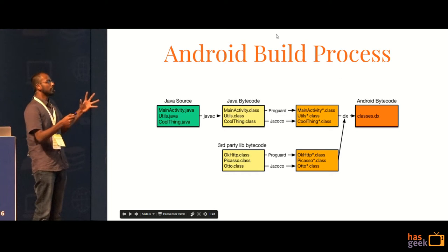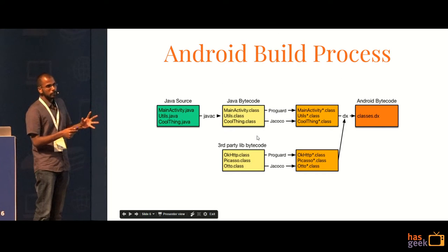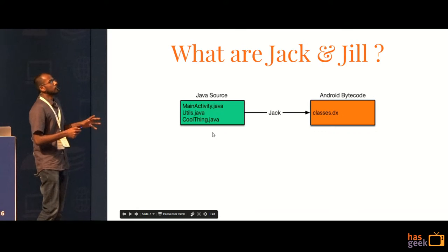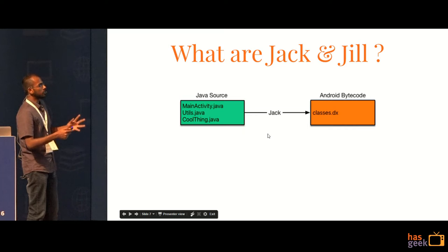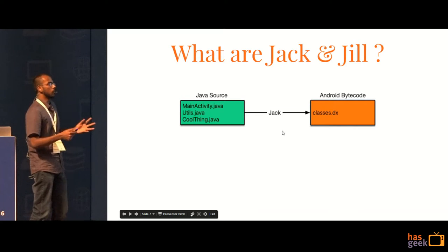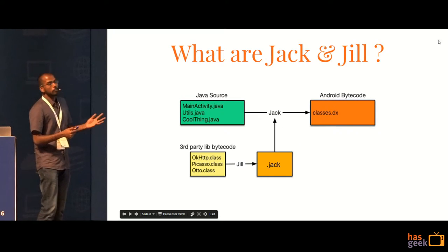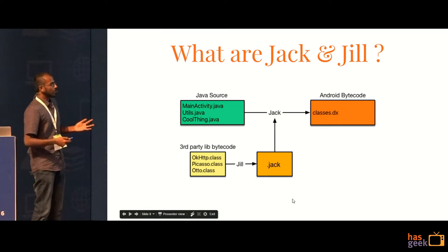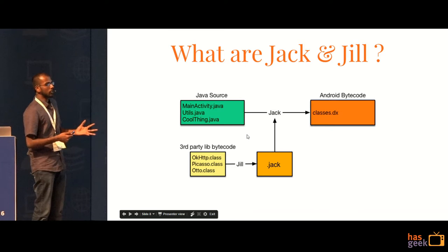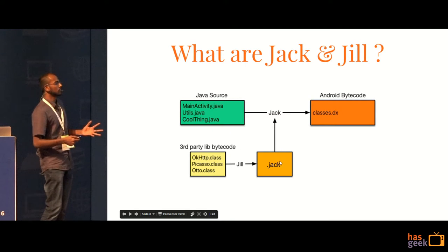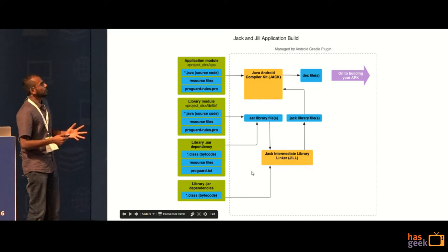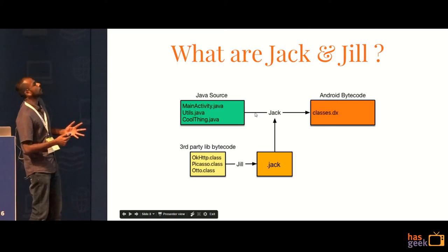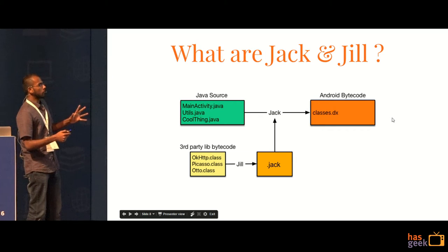Google wanted to reduce that and reduce the number of dependencies involved. In Jack and Jill, you have the Java source code and you directly get Android bytecode. There is no intermediate step involved. But if you are using any third party libraries, then you need an intermediate step to make Jack understand what the third party library is. There is this external dot Jack format. So this is the entire build process in simple terms.